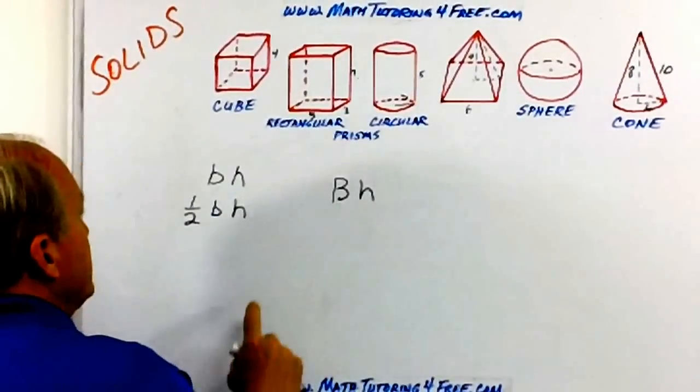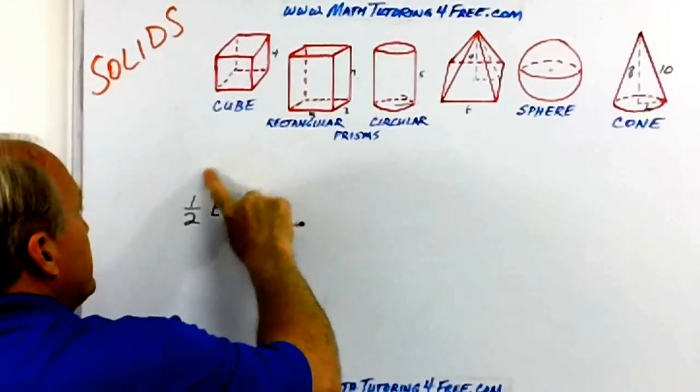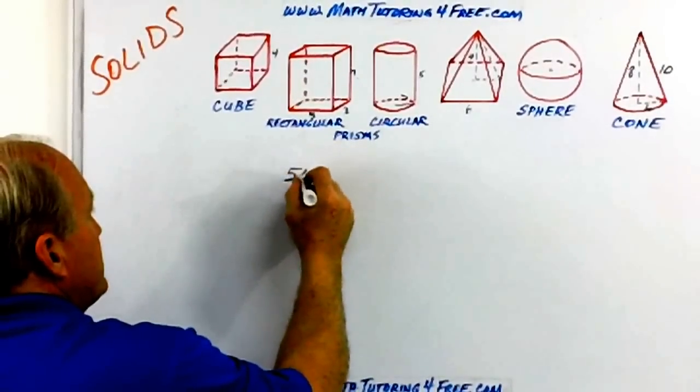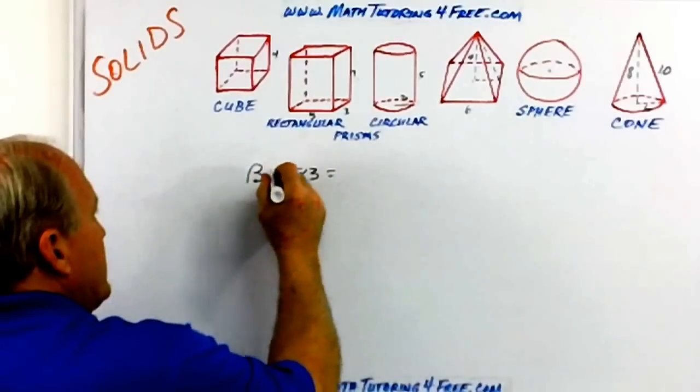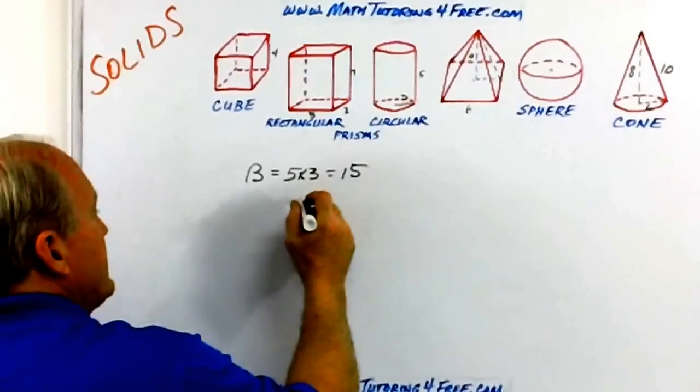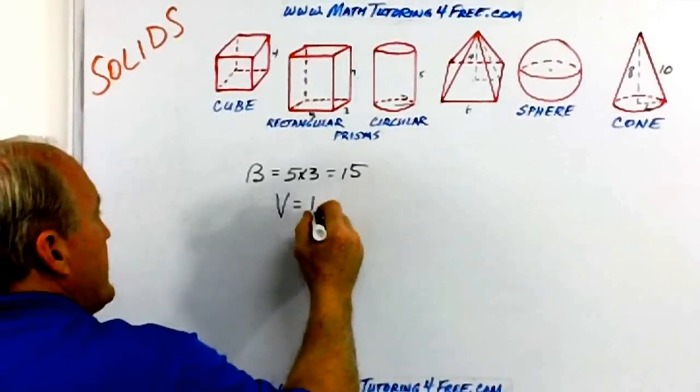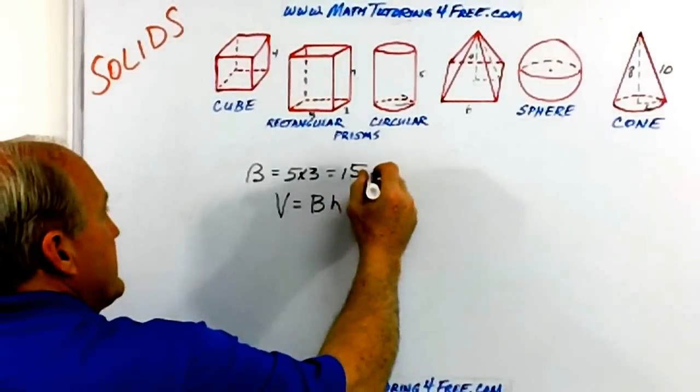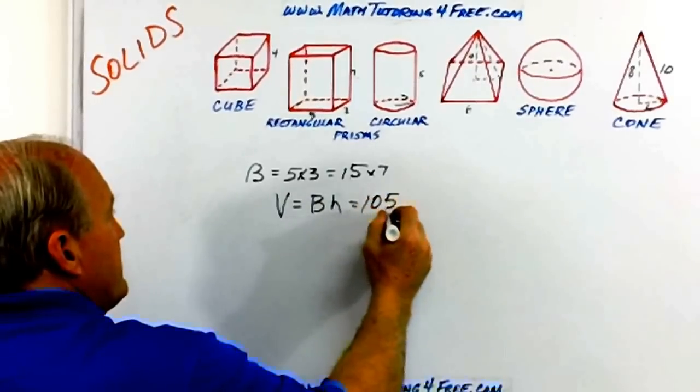So let's look at this particular rectangle. If we say the base is five times three, the area of the base or capital B is equal to 15. And therefore 15 times the height. So the volume of any rectangular solid would be the base, the area of the base times the height. The area of the base is 15, the height is seven. So we have seven times five, 35. So it'd be 105.